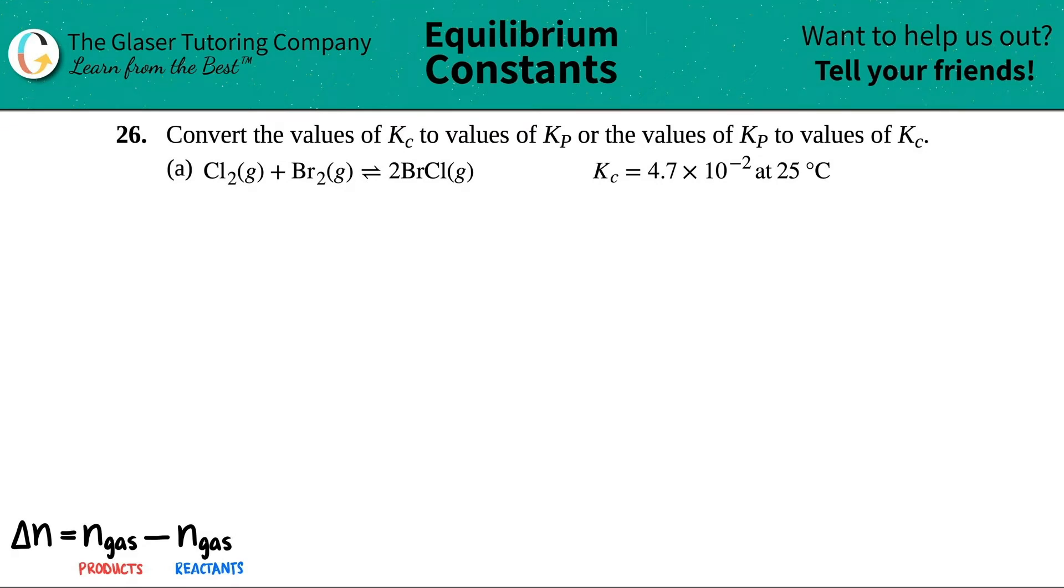Number 26, convert the values of Kc to values of Kp, or the values of Kp to values of Kc. And then we have letter A. So in this case, we have a balanced equation, which I'll just write out first. We have Cl2 gas plus Br2 gas, and this comes to equilibrium with 2BrCl gas. In this case, they gave us a Kc.